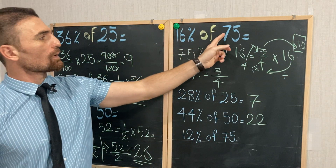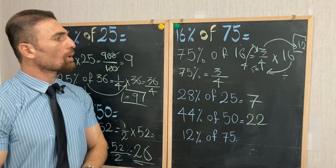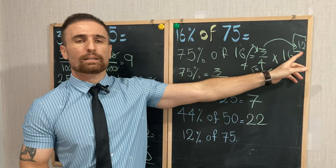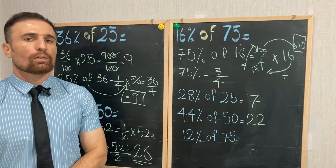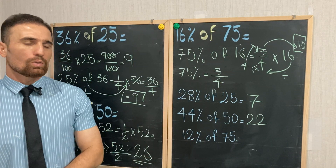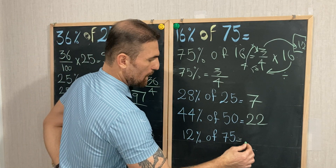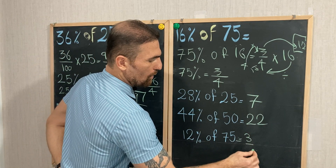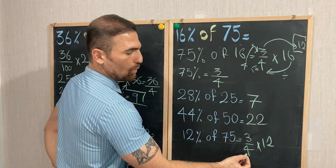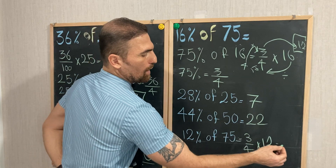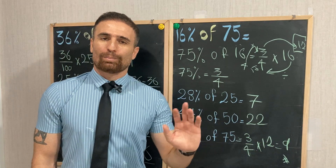So 16 percent of 75 equals 12 — that is 16 times 3 divided by 4, or simply 12. Now your turn: what is 12 percent of 75? Apply the same rule — 3 over 4 times 12. First 12 divided by 4 equals 3, then 3 times 3 equals 9. And this is our answer. Bye!